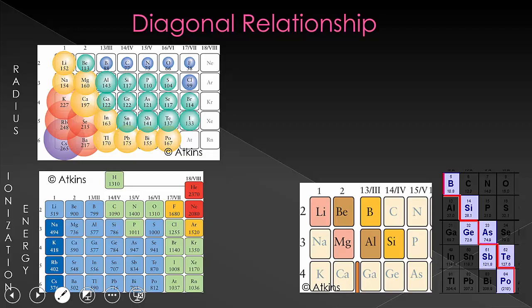Since the atomic radius gets bigger as you move down the periodic table and bigger as you go to the left on the periodic table, as you go down and to the right, the values have to stay relatively similar because one trend says that it's getting bigger and one trend says that it's getting smaller, leaving the diagonal to be about the same.